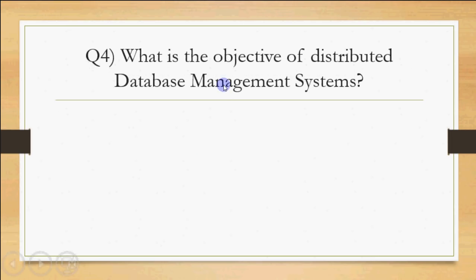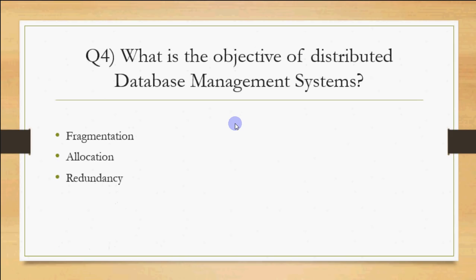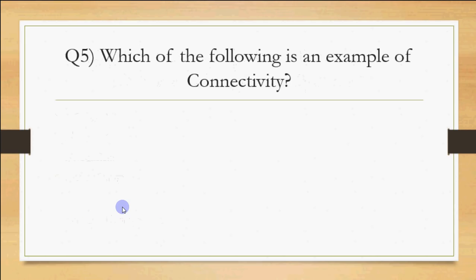Fourth question: what is the objective of a distributed database management system? In a distributed DBMS, we can use data from any computer without knowing where the data is actually stored. So it is a transparent system — you can access and use data without knowing its physical location. The main objective is transparency. The system is transparent to the user, so the objective behind a distributed database management system is transparency.